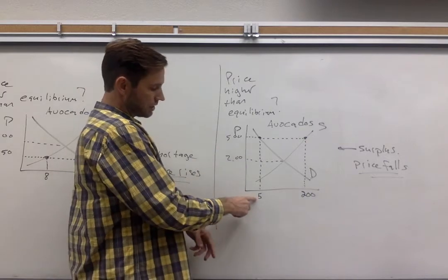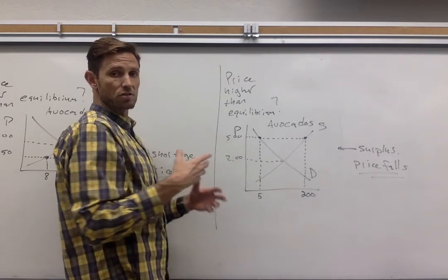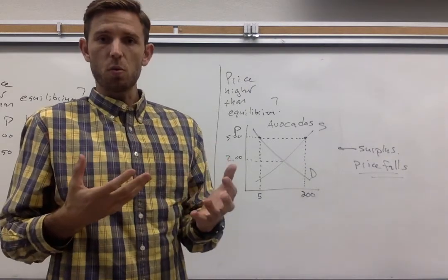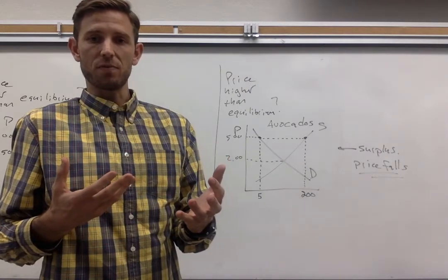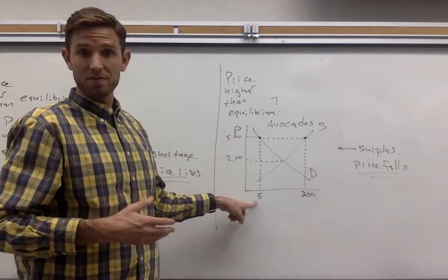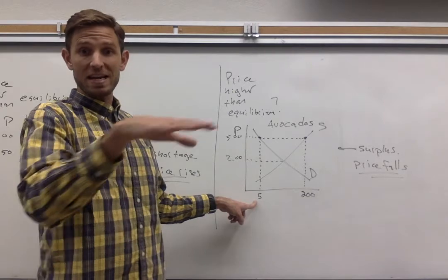Again, your logic should tell you that that higher price is going to cause a reduction in quantity demanded. Buyers, in other words, aren't going to want to buy as much as they did before. And so if the price is up there at five bucks, the graph is telling me that only five avocados are demanded from everybody.